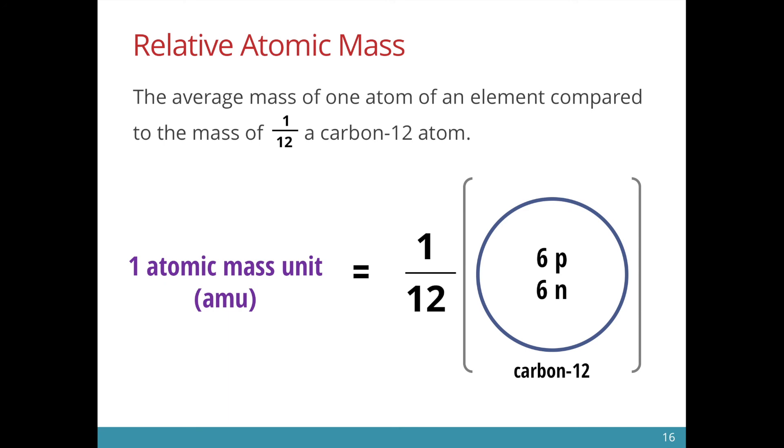So every mass number you see inside the periodic table will be compared to one twelfth of a carbon-12 atom. Above here you see the definition, this is important you need to remember this. The average mass of one atom compared to the mass of one twelfth of a carbon-12 atom. The word average here is important and one twelfth of a carbon-12 atom is also a key word.